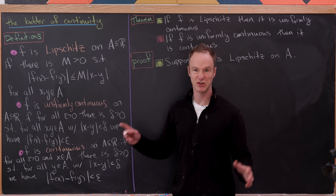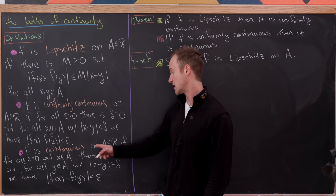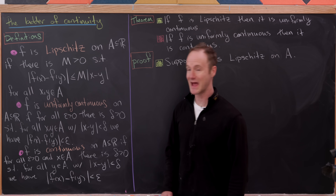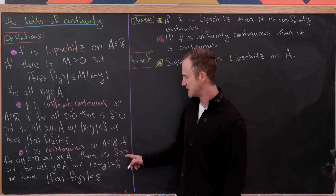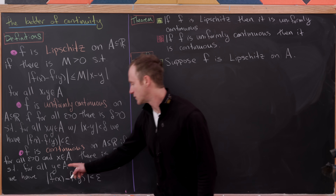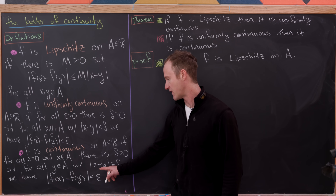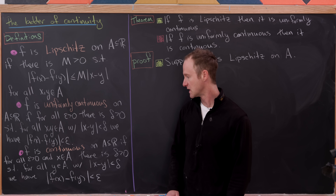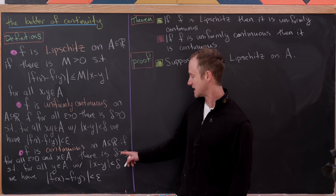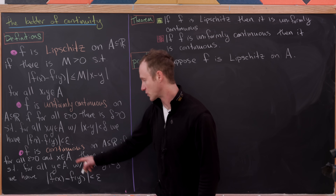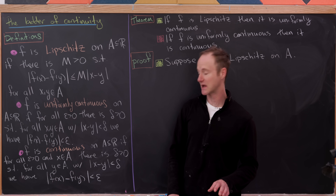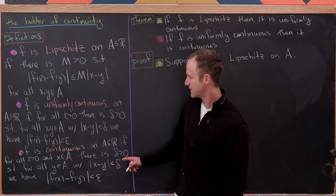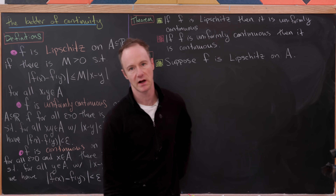Next, f is continuous on A if for all epsilon greater than zero and for x in A, we can find a delta greater than zero such that for all y within delta of x, the absolute value of f(x) minus f(y) is less than epsilon. Here, delta was chosen after we fixed the point x, meaning delta can depend on x — and that's what distinguishes continuity from uniform continuity.